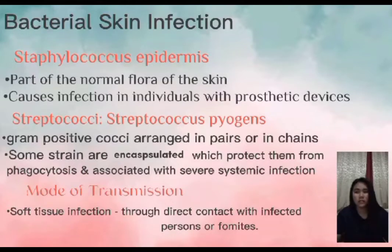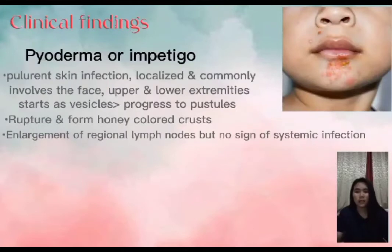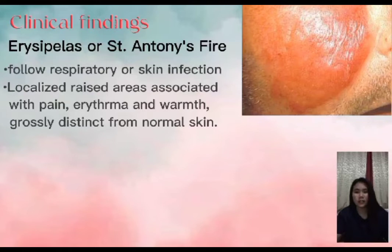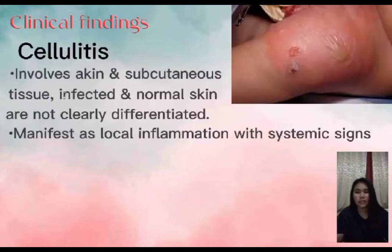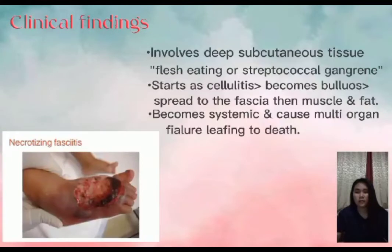The mode of transmission for soft tissue infection is through direct contact with an infected person. Clinical findings include: pyoderma or impetigo, a purulent skin infection that is localized and commonly involves the face and upper and lower extremities. It starts as vesicles, progresses to pustules that rupture and form honey-colored crusts, with enlargement of regional lymph nodes but no signs of systemic infection. Erysipelas, or Saint Anthony's Fire, is a skin infection presenting as localized, raised areas associated with pain, redness, and warmth, grossly distinct from normal skin. Cellulitis involves the skin and subcutaneous tissue where infected and normal skin are not clearly differentiated, manifesting as local inflammation with systemic signs.